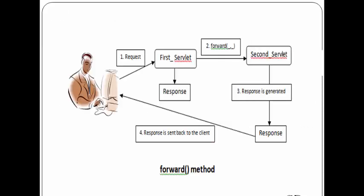This is the flow diagram for the forward method. A client is sending a request, which will be accepted by the first servlet. Then it will be forwarding the same request to the second servlet. The second servlet will be generating a response, and then finally, this response will be sent back to the client.